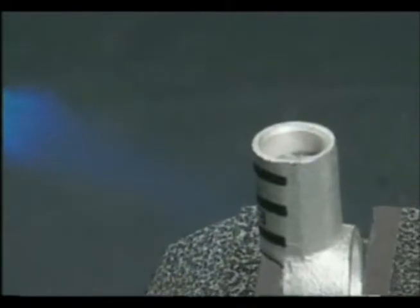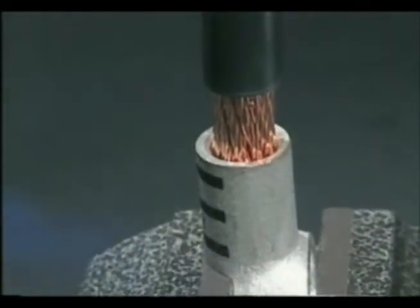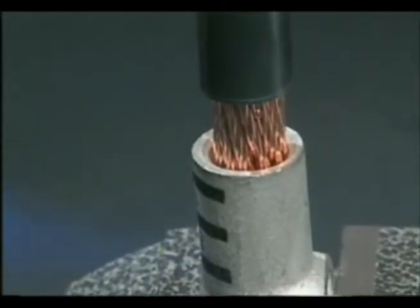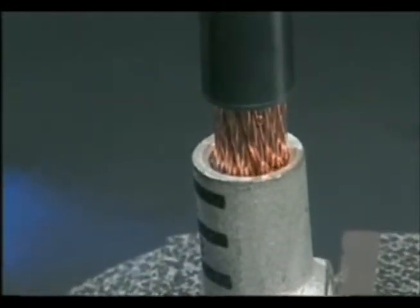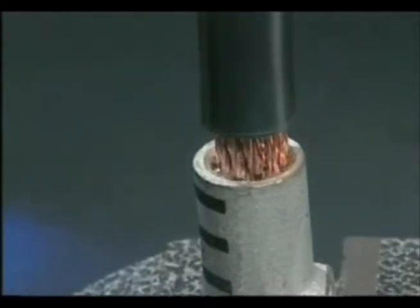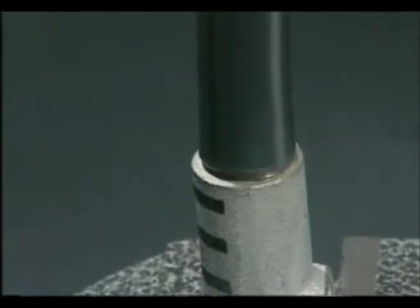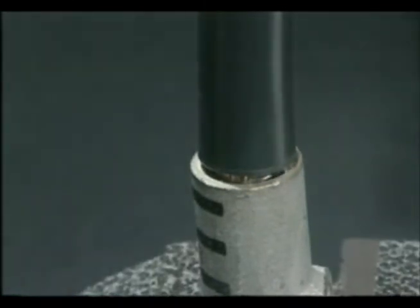Place the stripped portion of the cable into the terminal as the solder melts. Allow the exposed wire strands to sink into the terminal until the cable insulation is snug against the top of the terminal.